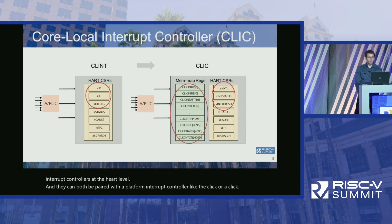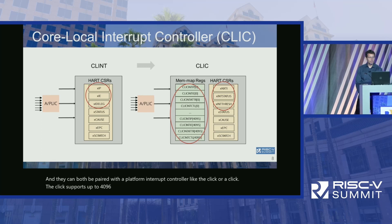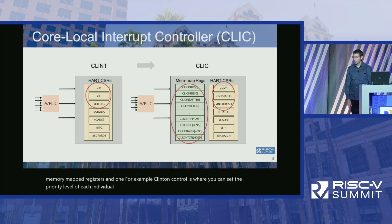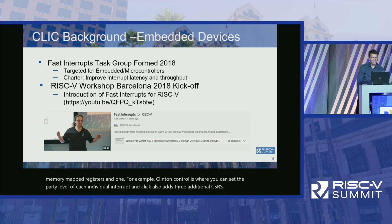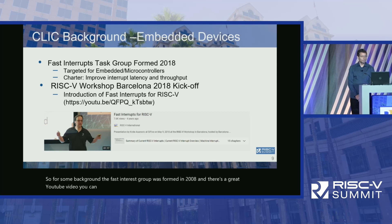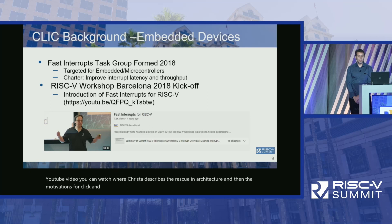CLIC supports up to 4,096 interrupts and replaces three of the CLINT CSRs with a set of memory-mapped registers. For example, CLINTCTRL is where you can set the priority level of each individual interrupt. CLIC also adds three additional CSRs. The Fast Interrupts Task Group was formed in 2018, and there's a YouTube video where Krste describes the RISC-V interrupt architecture and the motivations for CLIC. The main motivation is for embedded devices.